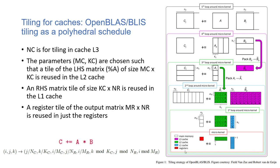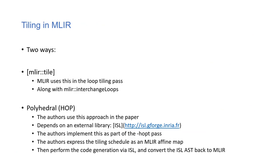The key question is: how do you break down with tiling in such a way that you maximize usage of L1, L2, L3 caches, with the innermost loops exploiting registers? The author lists a couple of ways to do tiling in MLIR — including the tile transform and loop interchange transform — but uses the polyhedral HOPT transform, which depends on the external ISL library.